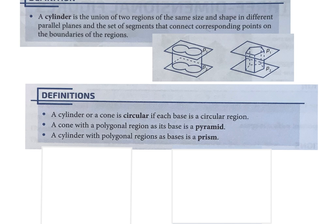A cylinder with a polygon region as its base is a prism. So prisms are a type of cylinder that have a polygon as their base. Pyramids are a type of cone that have a polygon as their base. The type of cylinder and cone you're used to seeing are circular ones with circles as their bases.